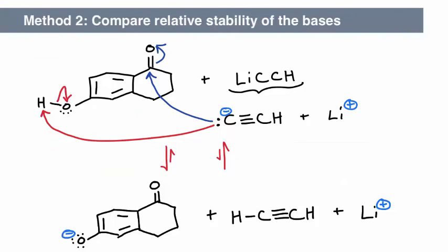We can also use method 2, compare the relative stabilities of the charged species, to determine whether the first step in the reaction is an acid-base one. Which species is the strongest base?